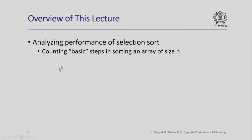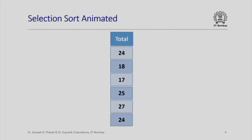Specifically, we are going to define some basic steps in sorting and we are going to count how many such basic steps selection sort requires to sort an array of size n. Let us quickly look at a little animation of how selection sort sorts an array of marks — the total marks in the quiz problem that we had seen earlier.